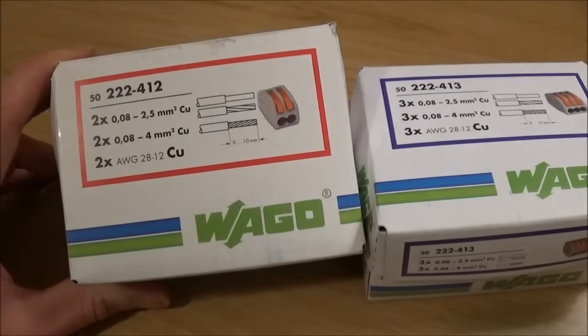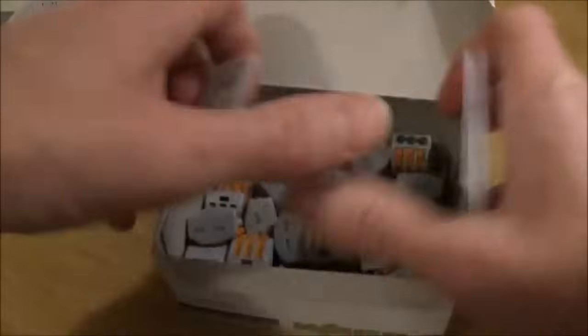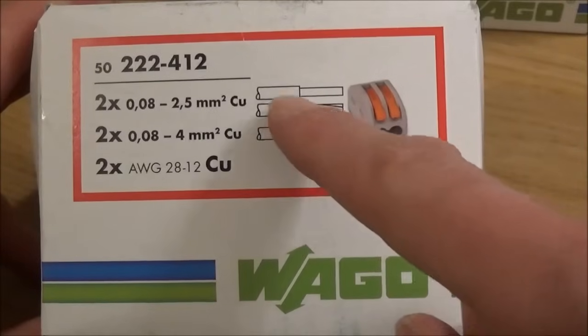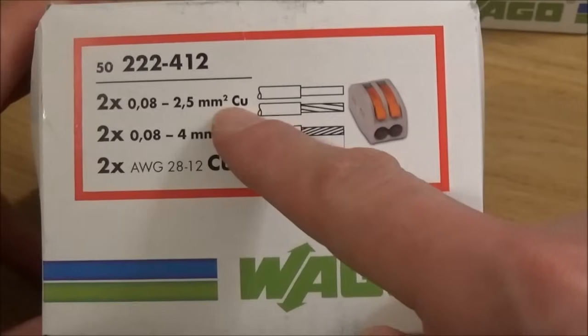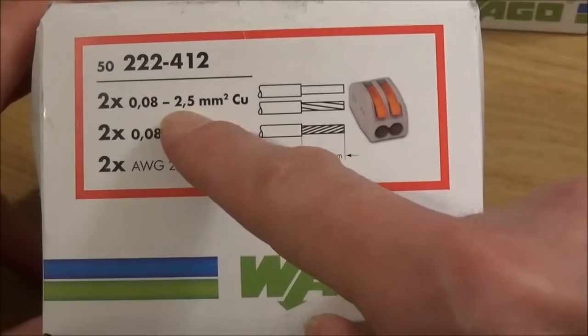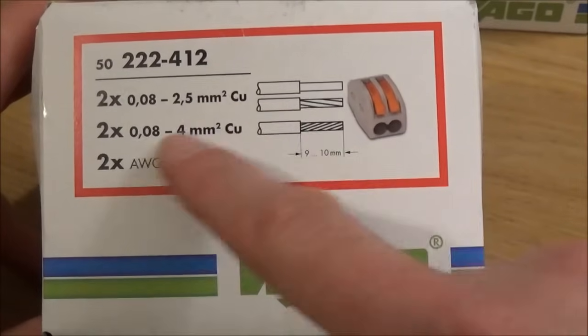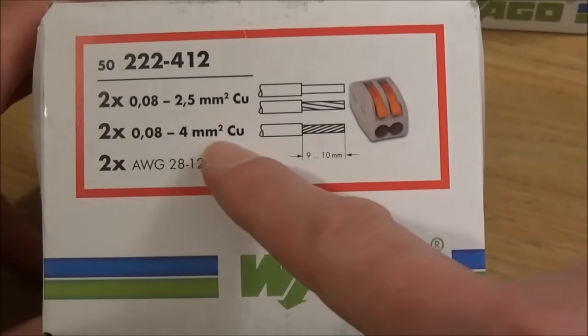The Wago 222 series come in a box like this. As you can see on the box they accept a solid conductor from 0.08mm up to 2.5mm, a braided cable from 0.08mm up to 2.5mm, and flexible cable from 0.08mm all the way up to 4mm.